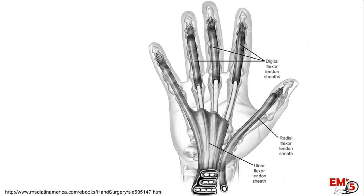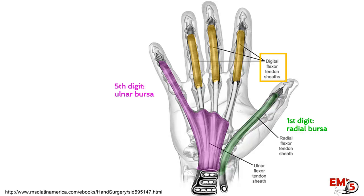This is an infection of the digital flexor tendon sheath. Of note, the first digit's flexor tendon sheath actually communicates with the radial bursa, and on the fifth digit it communicates with the ulnar bursa. One of the other complications is that these two can actually connect in about 50 to 80% of people, giving you what's called a horseshoe abscess.